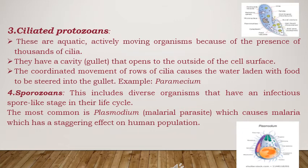The next one is the sporozoans. These are organisms that are parasitic in nature and show infectious spores in their life cycle. The most common is Plasmodium, which is a malarial parasite that causes malaria in the human population. These protozoans have the capacity to reproduce both sexually and asexually.